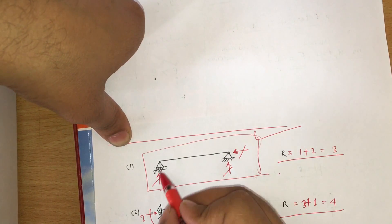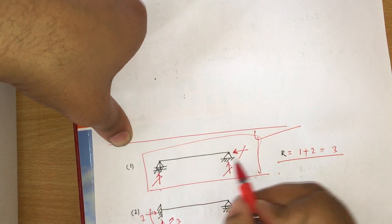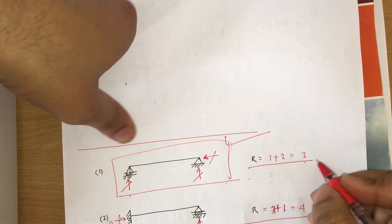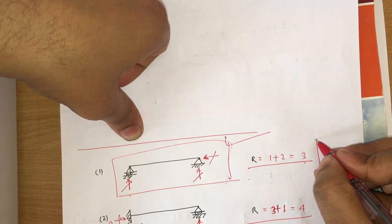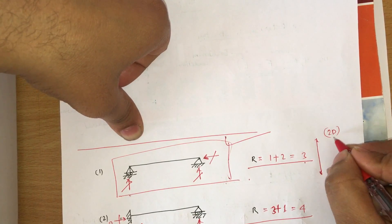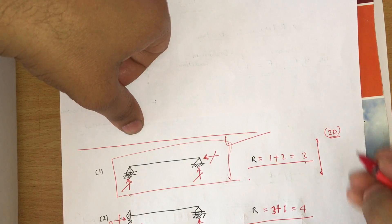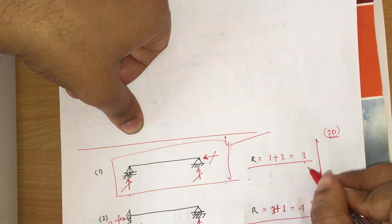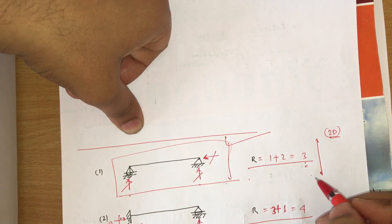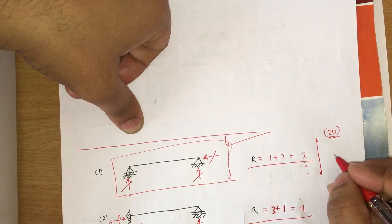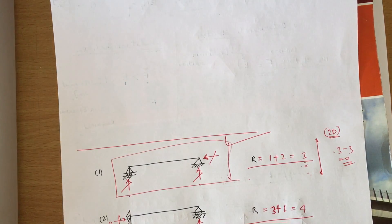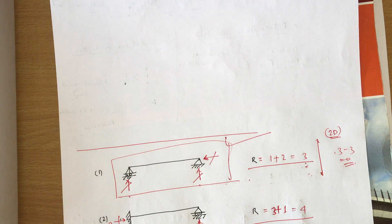The most important example is the simply supported beam — one end is a hinge and the other is a roller. Reactions are 3 in this case. For 2D equilibrium, there are 3 equilibrium conditions available, and there are 3 unknown reactions, so we can find all unknown forces. This gives 3 equilibrium conditions minus 3 unknowns equals 0, making it a statically determinate structure.